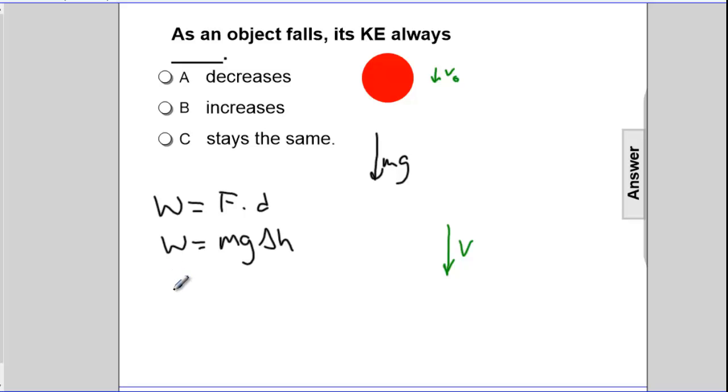So really, this is extra information, but we'll write the formula for KE. KE is one-half mv squared.